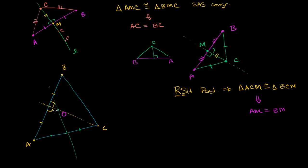Now there are some interesting properties of point O. We know that since O sits on AB's perpendicular bisector, the distance from O to B is going to be the same as the distance from O to A. That's what we proved in the first proof. So we know that OA is going to be equal to OB. But we also know, because it's the intersection of this perpendicular bisector and this other perpendicular bisector, that because O sits on the perpendicular bisector of AC, it's equidistant from A and C. So we know that OA is equal to OC.